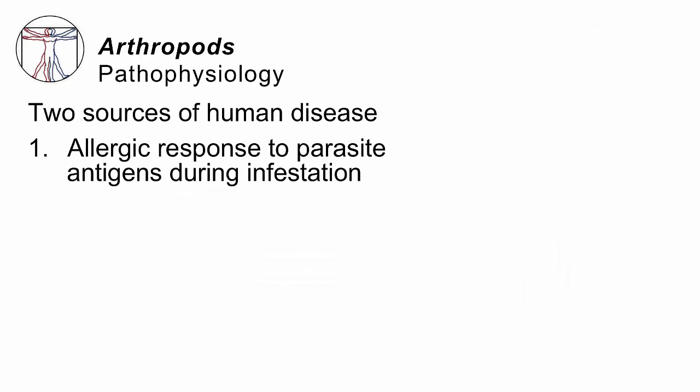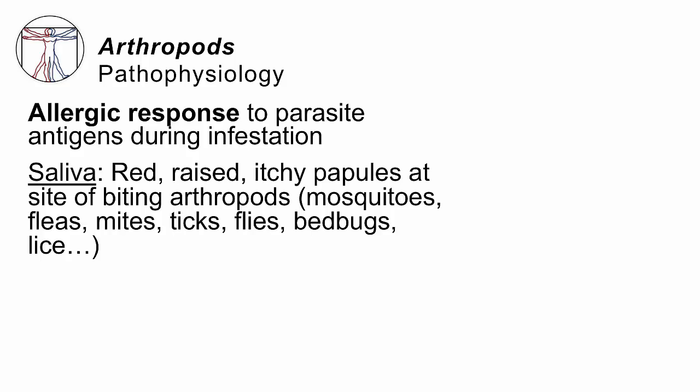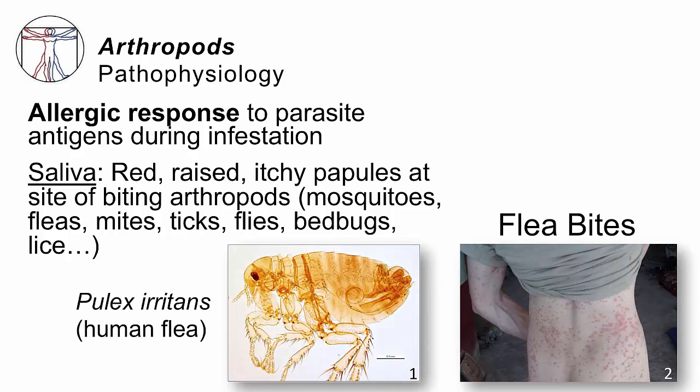How do they make you sick? One of two ways. Number one, you can have an allergic response to the parasite antigens when you're becoming infested. One classic example is their saliva. The saliva of a creature, when it's sucking your blood, will get into the subcutaneous tissue. The saliva is shown to the dendritic cells doing immune surveillance just inside the skin, and they will recruit an inflammatory response that leads to an itchy bug bite — red raised itchy papules at the site of the bite. This happens with mosquitoes, fleas, ticks, mites, flies, bedbugs, and lice.